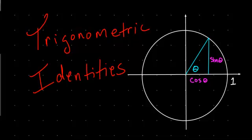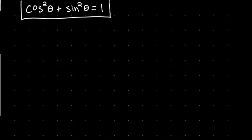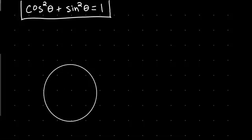The first identity we're going to do is the fundamental identity: cosine squared theta plus sine squared theta equals 1. We've already done this one but it's worth looking at again — it's probably the most important identity.